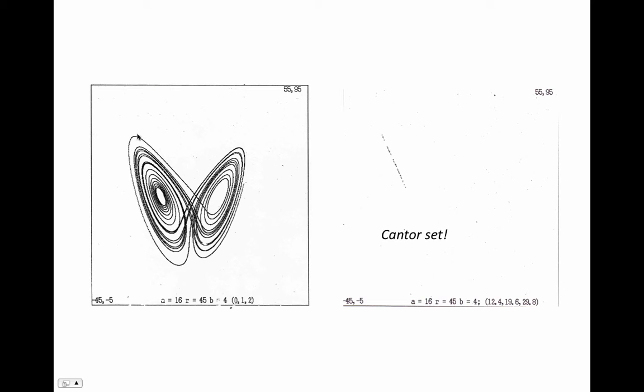You get what's called a Cantor set. The way you construct a Cantor set is to repeatedly take chunks out of a line segment.